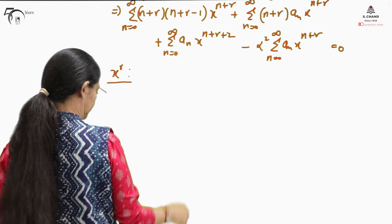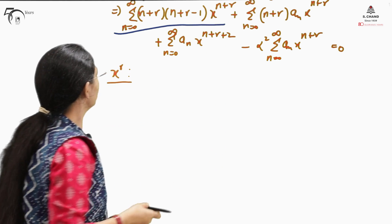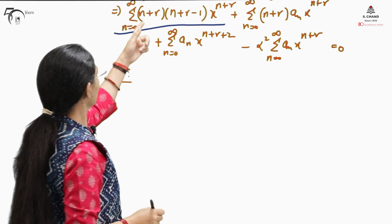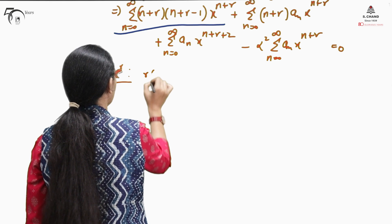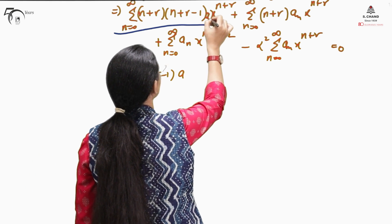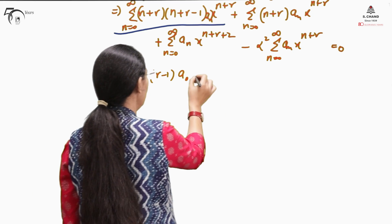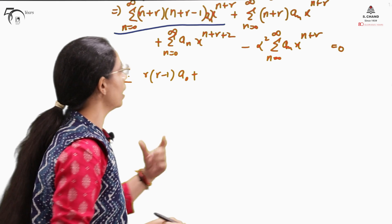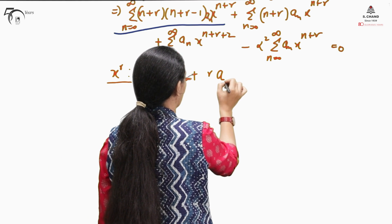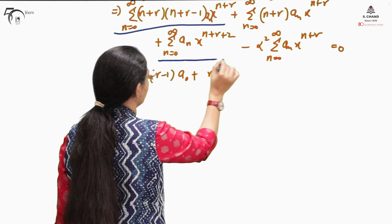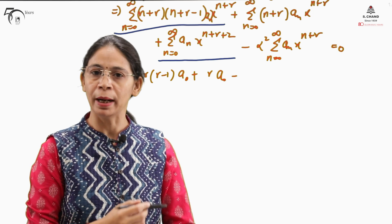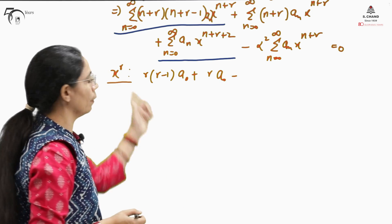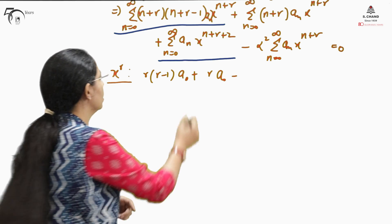Looking at the expression, the minimum value n takes is 0. Substituting n = 0 gives x^r. The first term contributes r(r-1)·a₀, and the second term also contributes, giving r·a₀. The third term (x²·y series) does not contribute because even at minimum n = 0, the power of x is r+2. Therefore, this term does not contribute when equating the coefficient of x^r.